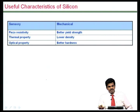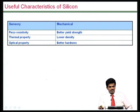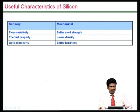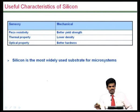Apart from the well-known mechanical and electrical properties of silicon, it also has some very interesting properties that can be exploited in the context of microsystems. It exhibits a sensory property called piezoresistivity — that is, by applying a stress, the resistance can be varied. It has very good thermal characteristics and also some optical properties, such as photodiodes and other devices made of silicon. Because of these additional features, many more microsystems can be built on silicon than on other substrate materials, making it the most widely used substrate material in microsystems.